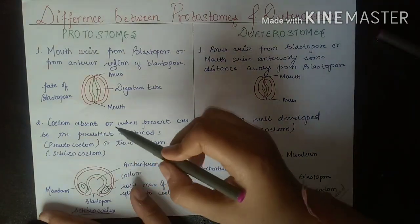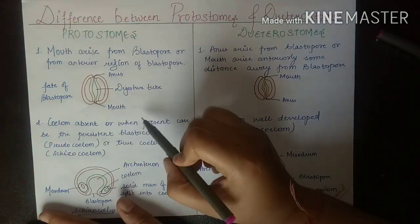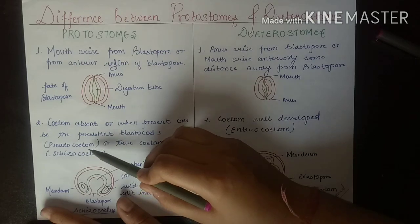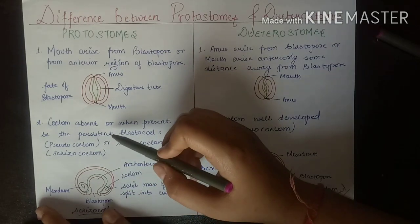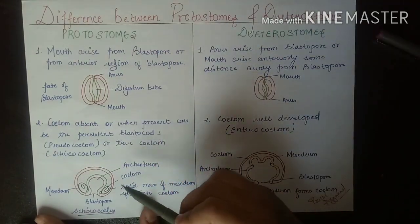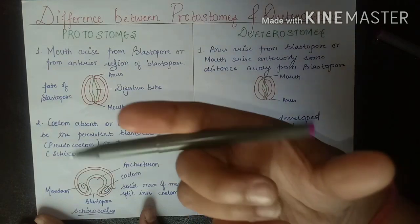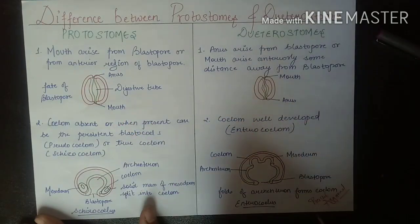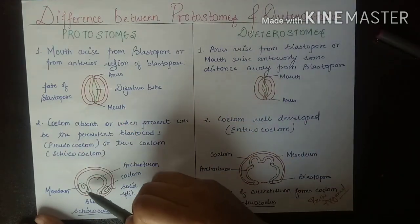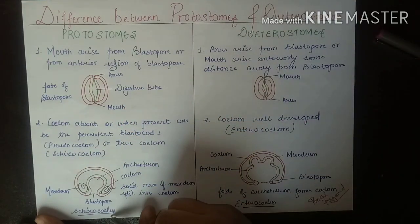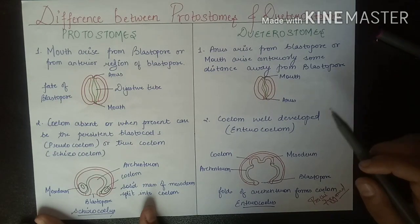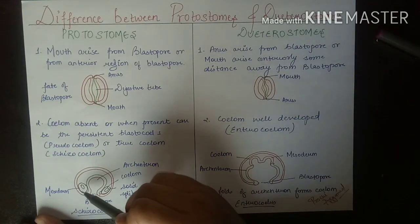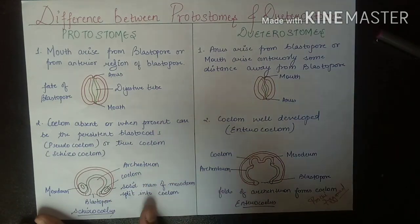The coelom in protostomes is either absent, pseudocoelous, or a schizocoelom. In schizocoelom, the mesoderm is split into two parts. As you can see here, the coelom formed this way is known as a schizocoelom, and these are the parts of the coelom.